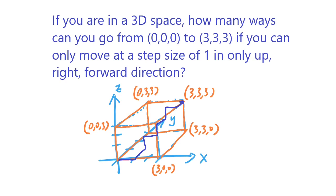So imagine you are in a 3D space, how many ways can you go from (0,0,0) basically the origin to the coordinate (3,3,3).